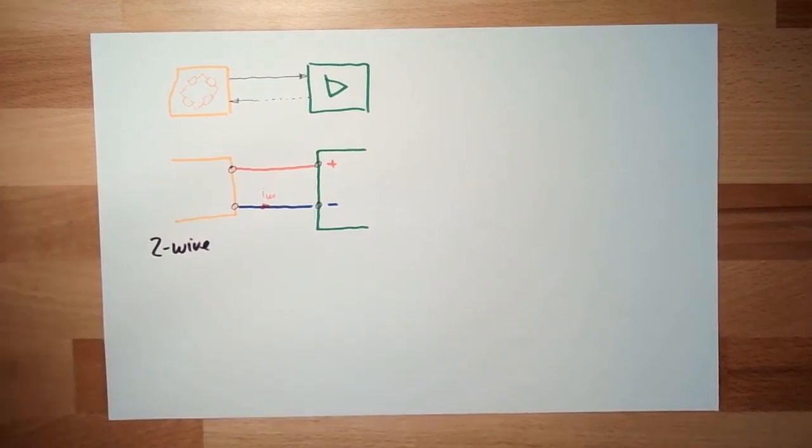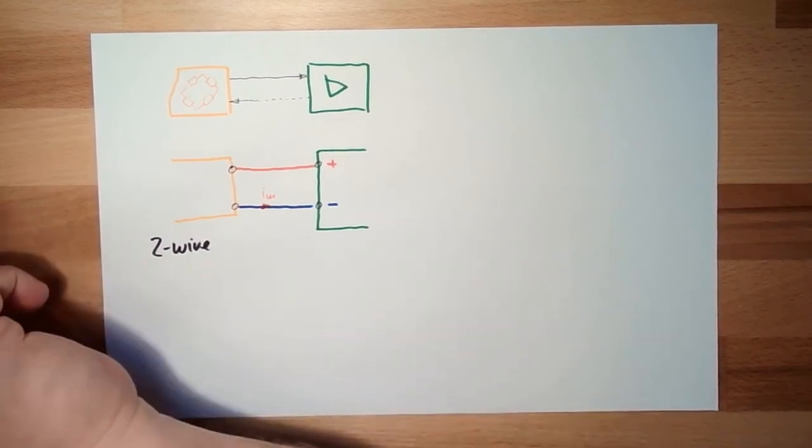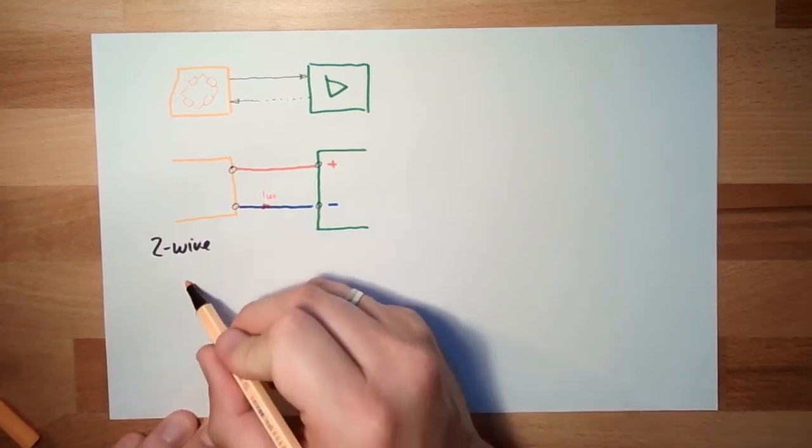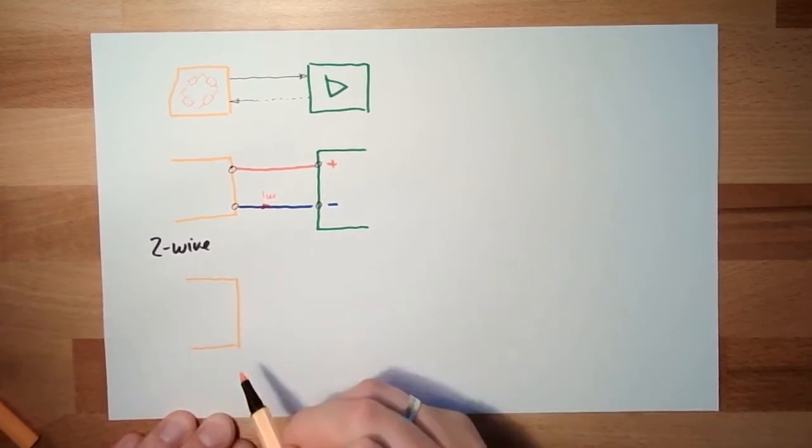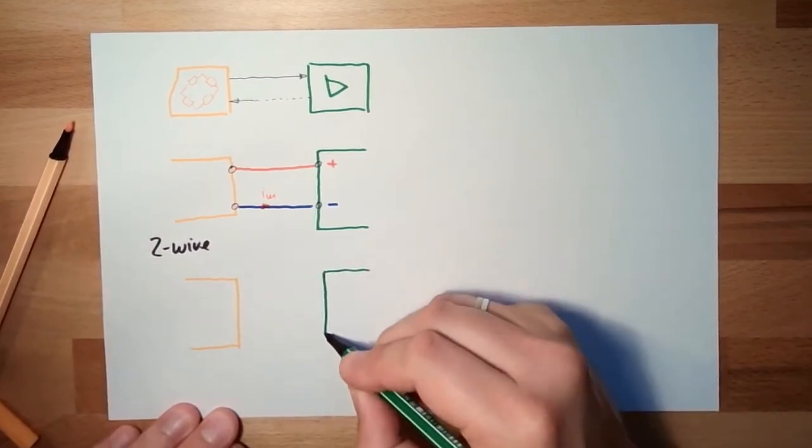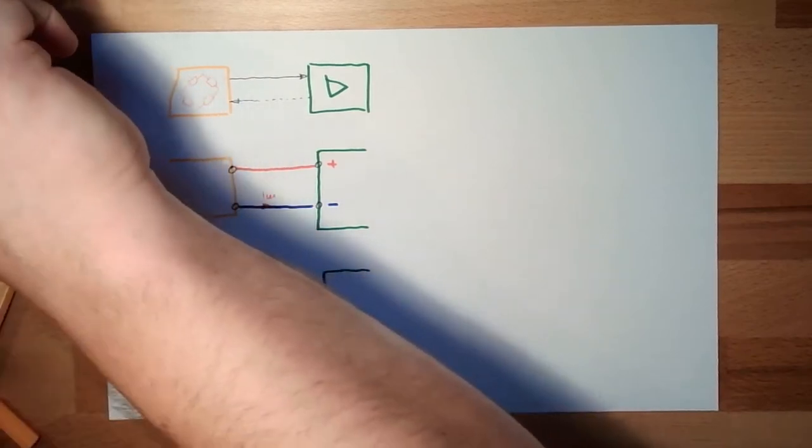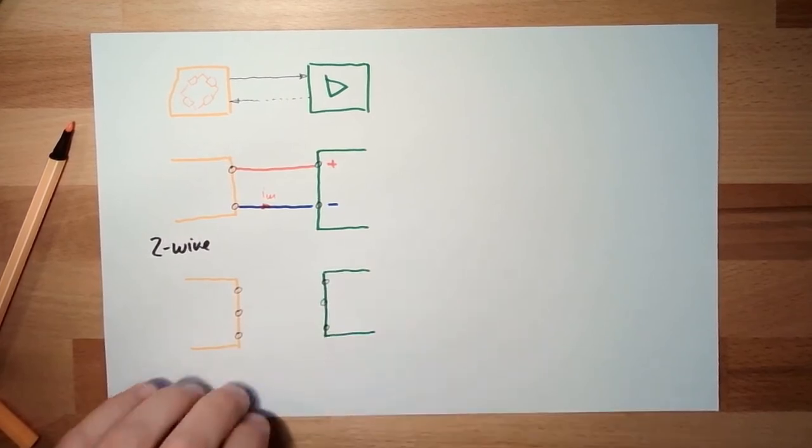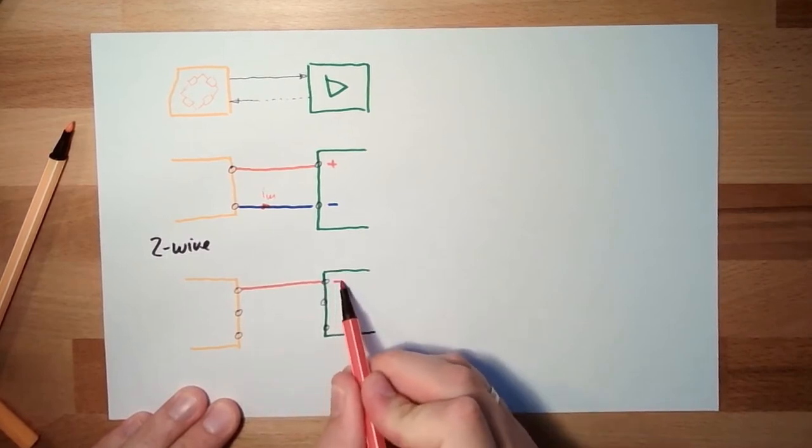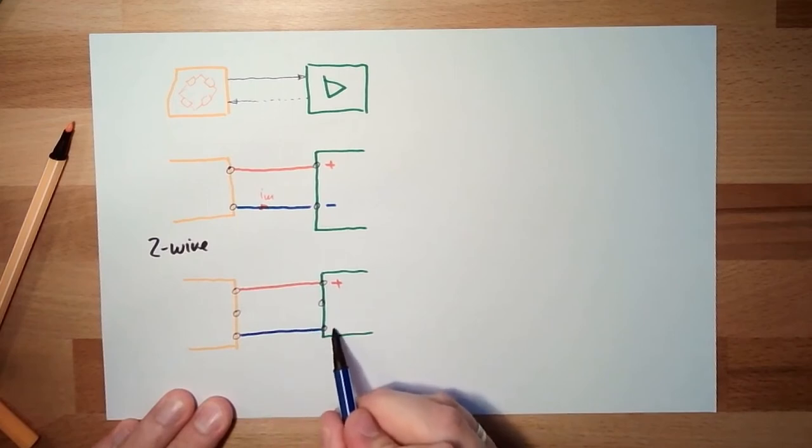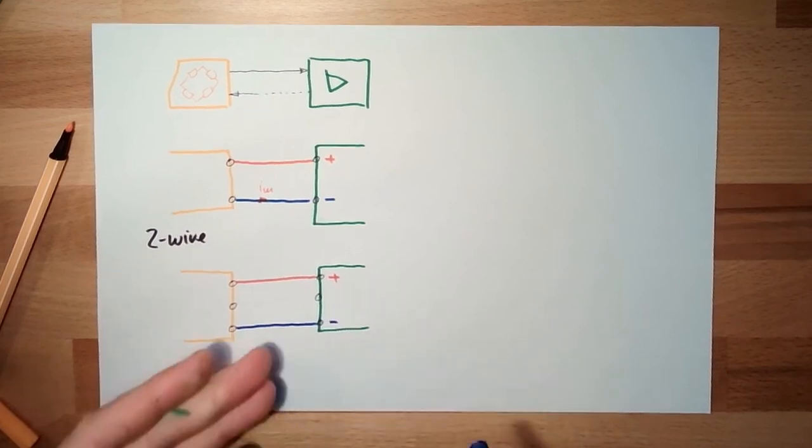Then, next possibility. Sensor. Amplifier. This time we have three. Again, I have a plus cable. Plus. And I have a minus cable. In between, there's the supply voltage for the sensor.